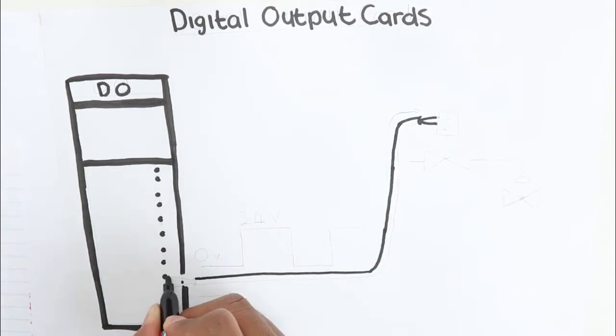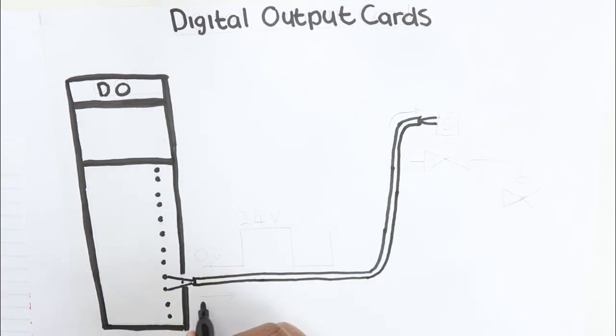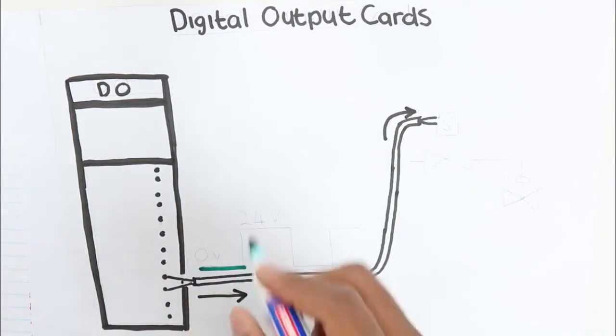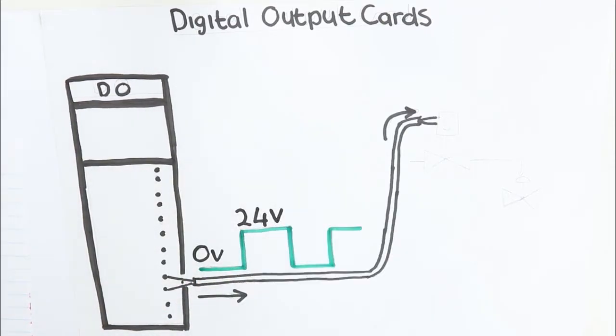It only tells the equipment to go on or off, and the common voltage that is also used is 0 and 24 volts to represent the off or on signals respectively.